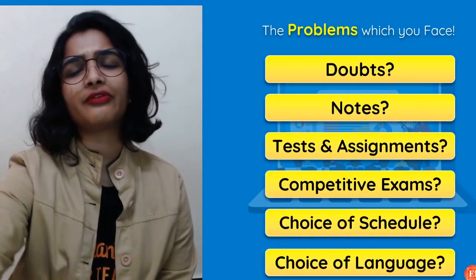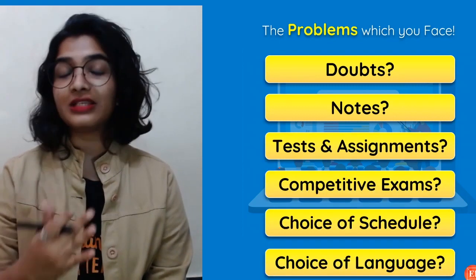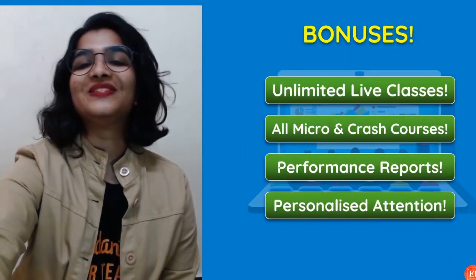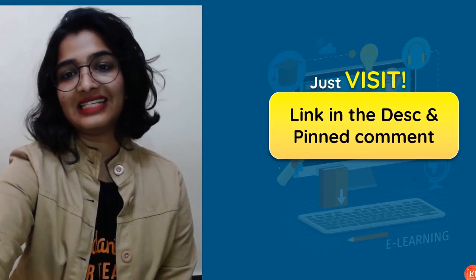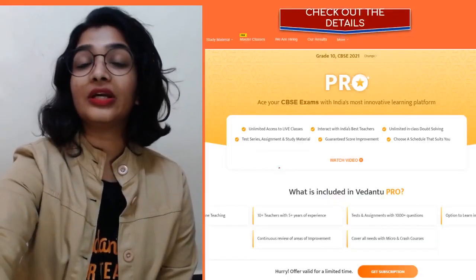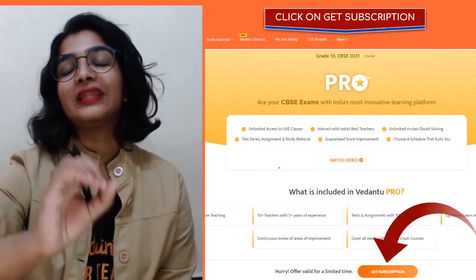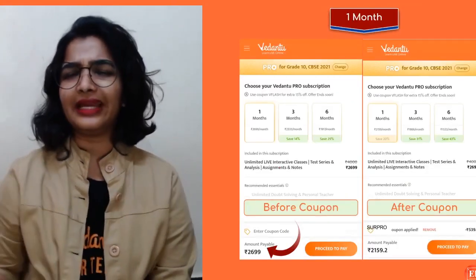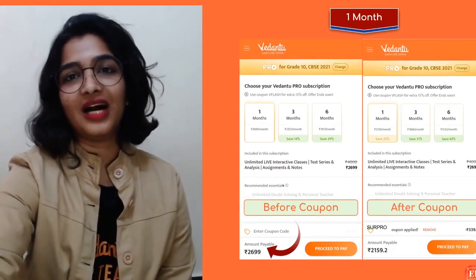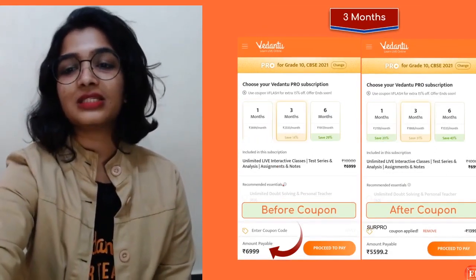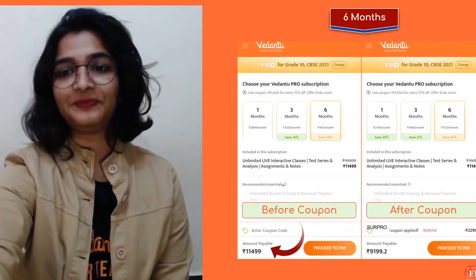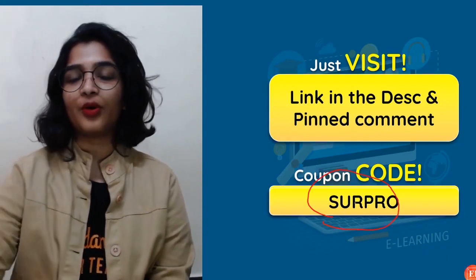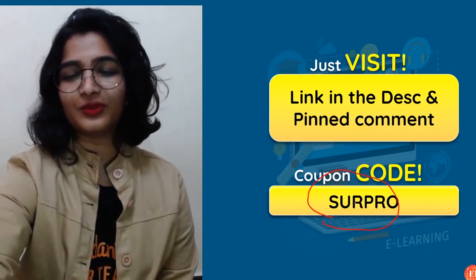Before that, if you are facing any of these problems, if you're not facing, well and good. But if you want these bonuses also, just head to the link given in the description box and pin comment, choose your board, grade and click on to get subscription. But if you want 20% discount, who doesn't like discount? Use the coupon code S-U-R-P-R-O. That additional 20% discount is from my side.